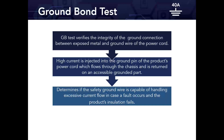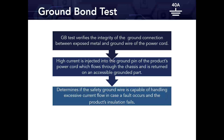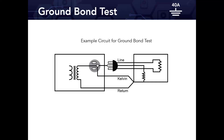We're measuring the impedance seen when we inject current — whether 10 or 25 amps depending on the standard — making sure that if a fault occurs, there is still no shock hazard to the end user. The current is absorbed by the ground circuit and sent to ground through the wall outlet. In other words, it determines whether the safety ground wire is capable of handling excessive current flow in case a fault occurs and the product's insulation fails.